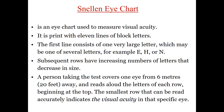To diagnose visual acuity, we use the Snellen Eye Chart. The Snellen Eye Chart has 11 lines of letters. These letters have specific geometry and thickness and are called optotypes. The first line has one very large letter. The letters used in the Snellen Eye Chart are nine: C, D, E, F, L, O, P, T, Z.